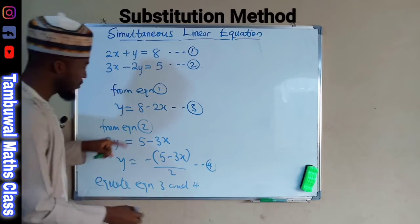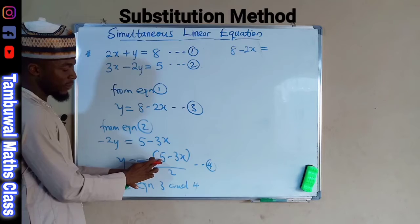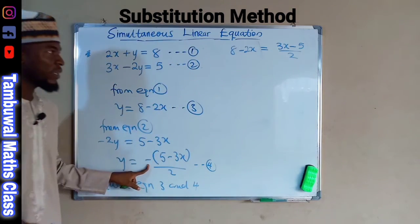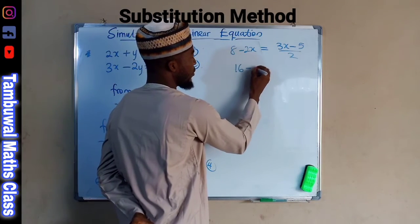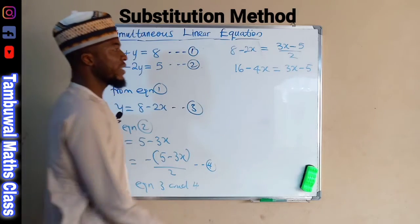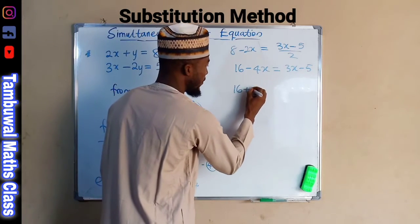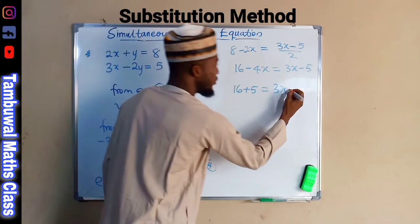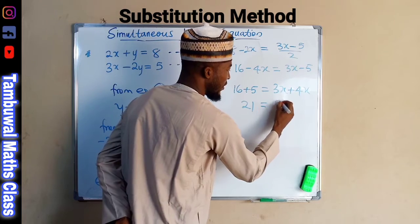Equation 3 gives 8 minus 2x, and this equals (3x minus 5) over 2. To clear the fraction, we multiply each term by 2, giving 16 minus 4x equals 3x minus 5. Collecting like terms, 16 plus 5 equals 3x plus 4x, so 21 equals 7x.